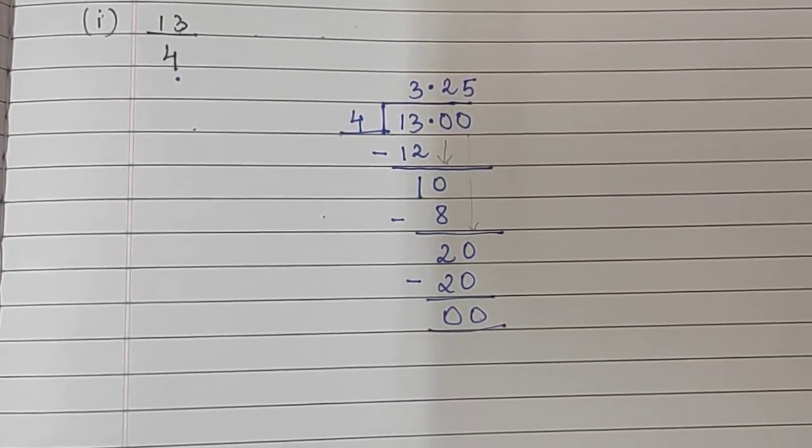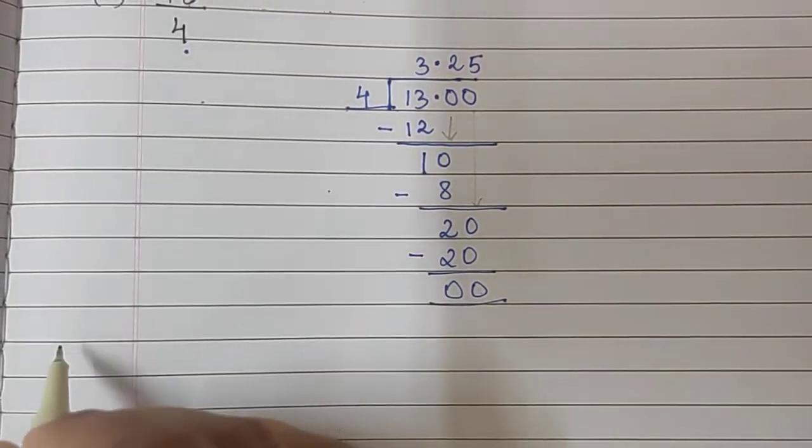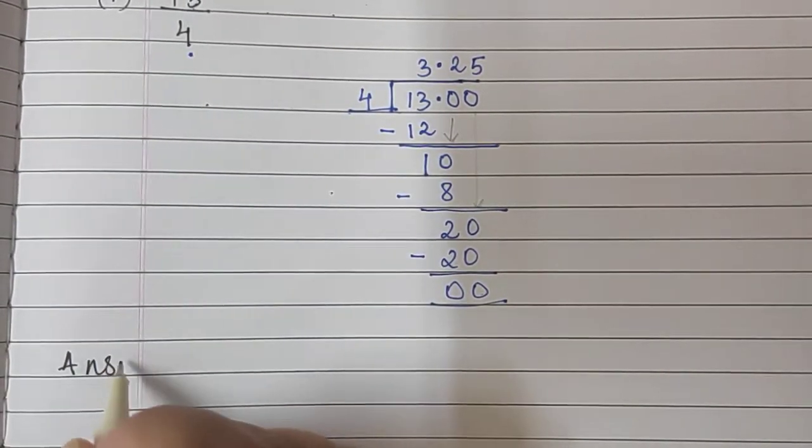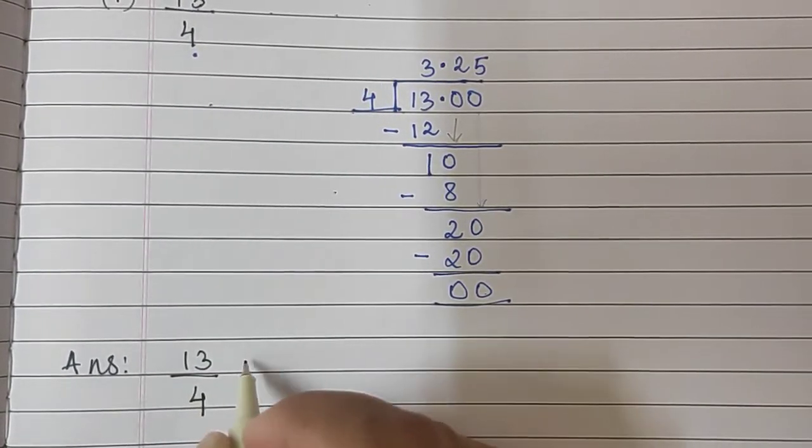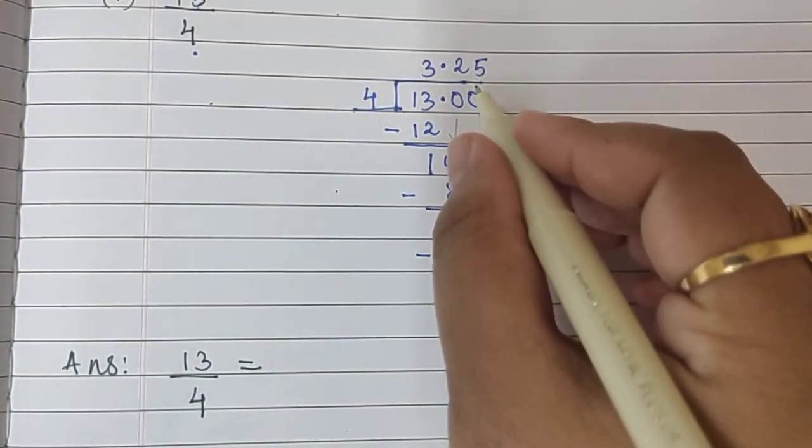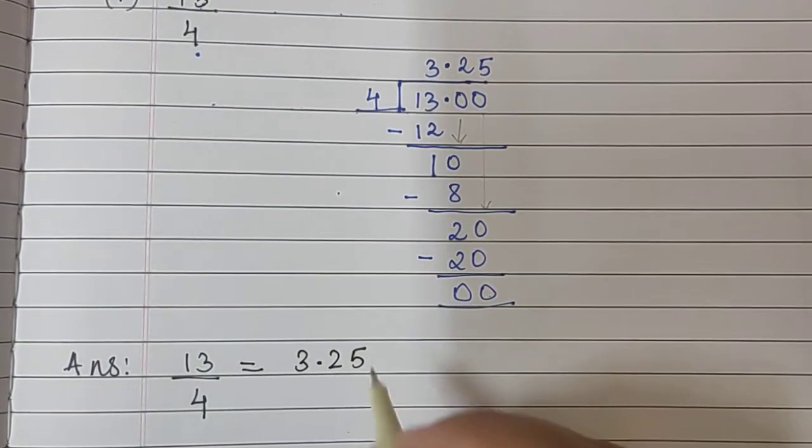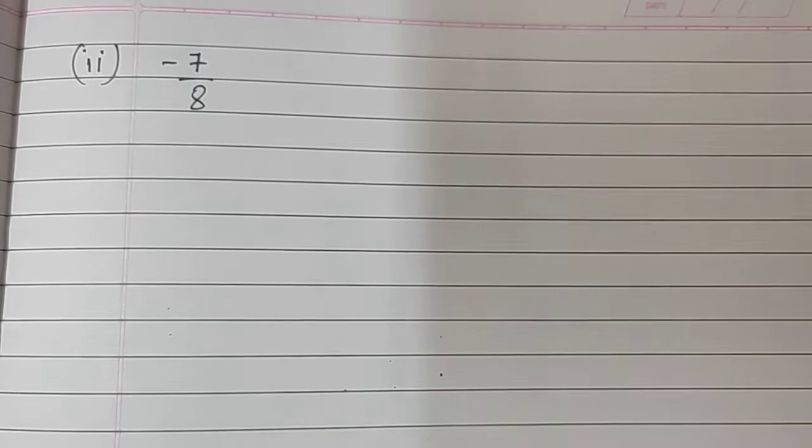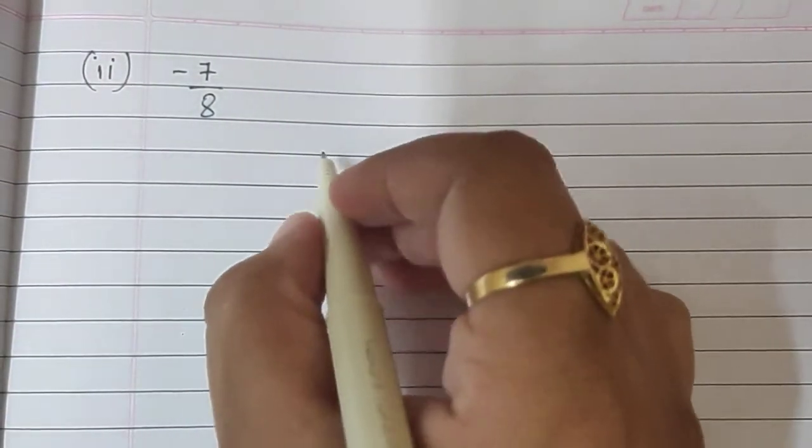So, our answer will be 13 upon 4 is equal to 3.25. Sum number 2, minus 7 upon 8.